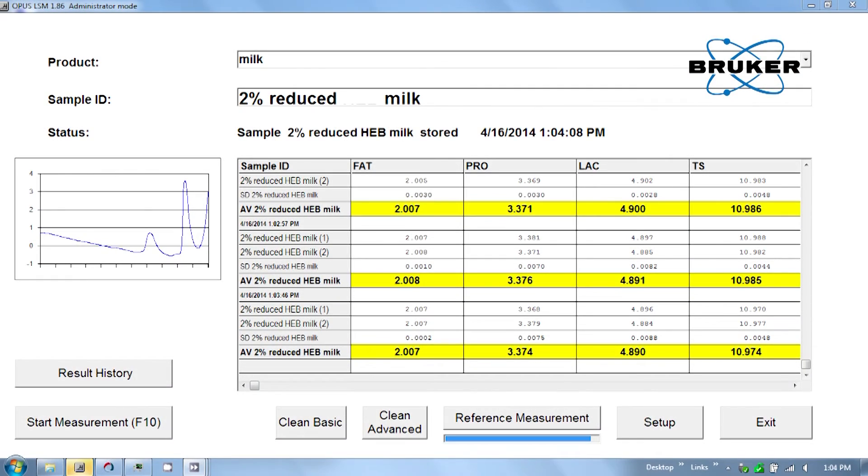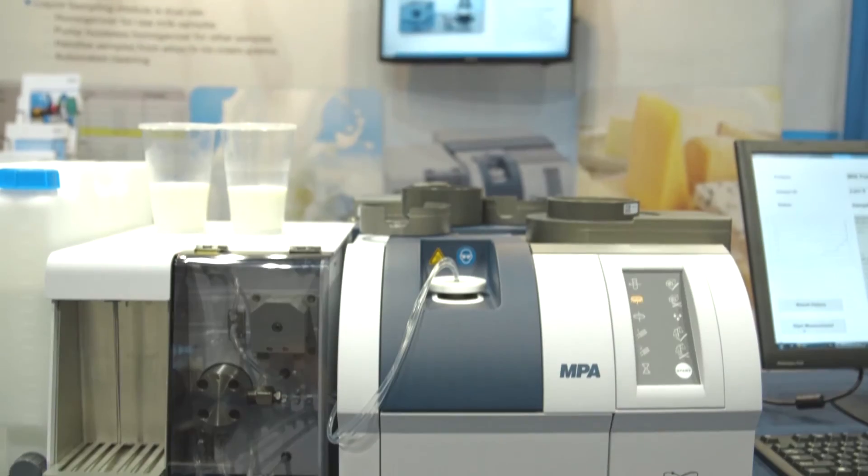The MPA features multiple channels which allow one to measure both liquids and solids on the same instrument, fully under computer control with no operator interaction required to change out modules or sampling accessories to switch between liquids and solid samples.